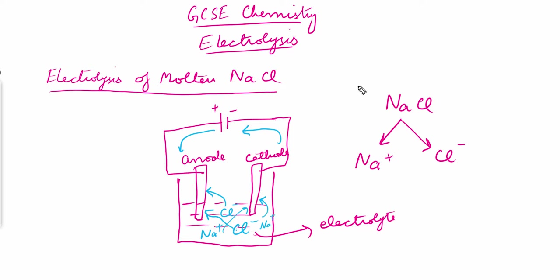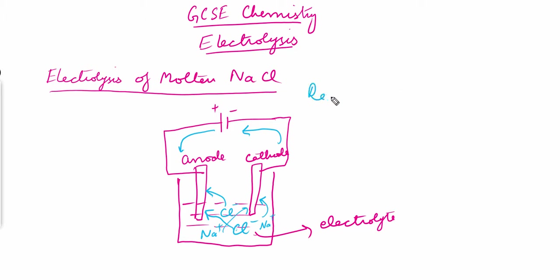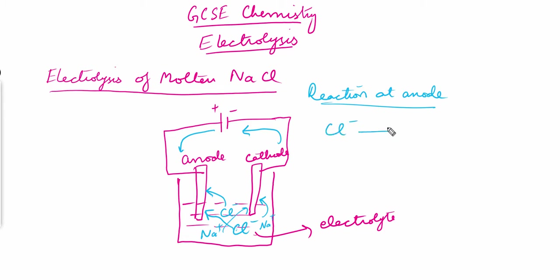In the process of electrolysis we write chemical equations for what happens at the anode and at the cathode. At the anode, the chloride ions move towards it. The chloride ion becomes chlorine gas (Cl₂) and gives two electrons to the anode. That is the reaction at the anode.